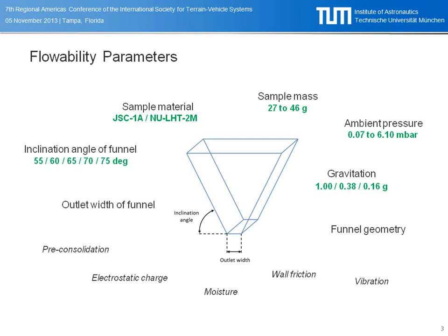Looking at the inclination angles, we investigated different angles from 55 to 75 degrees in combination with different outlet widths — 8, 13, and 18 millimeters — so that we could simulate designs like those used on the XMR analysis device, making the results comparable to those applications. We looked at symmetrical hoppers with the same inclination angles on both sides, but we also looked into asymmetrical configurations.